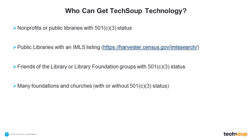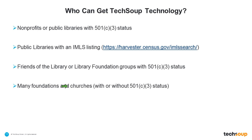I wanted to talk briefly about the types of organizations who can get technology donations. In case you are new to us: it is nonprofits and public libraries with 501 status, public libraries within the IMLS database, Friends of the Library programs or Library Foundation groups, foundations of all kinds — big, community, or family — and churches or houses of worship, synagogues, mosques, with or without 501 status.